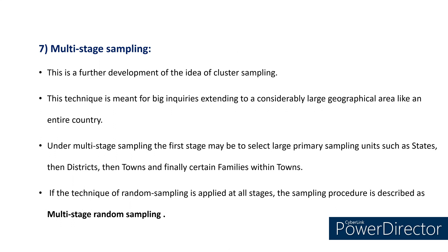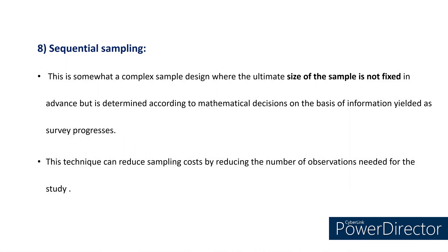Multistage sampling is a further development of the idea of cluster sampling. This technique is meant for big inquiries extending to a considerably large geographical area like an entire country. Under multistage sampling, the first stage may be to select large primary sampling units such as states, then districts, then towns, and finally certain families within the towns. If the technique of random sampling is applied at all stages, the procedure is described as multistage random sampling. Sequential sampling is a complex sample design where the ultimate size of the sample is not fixed in advance but is determined according to mathematical decisions on the basis of information yielded as the survey progresses. This helps to reduce sampling costs by reducing the number of observations needed.